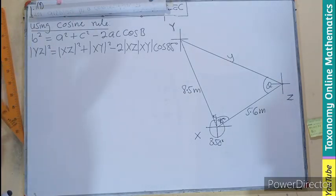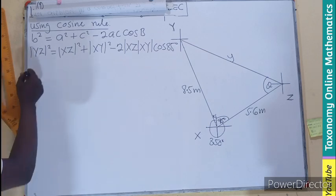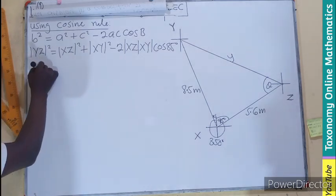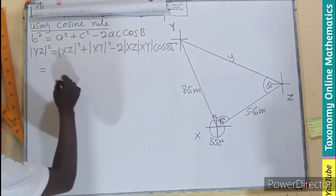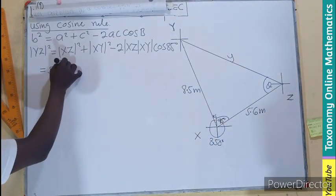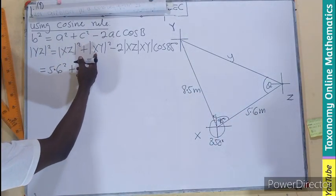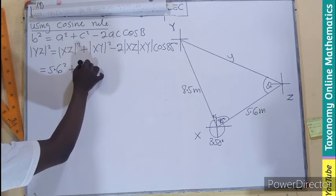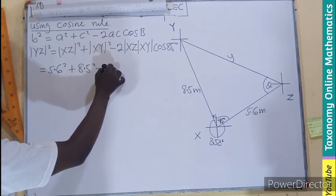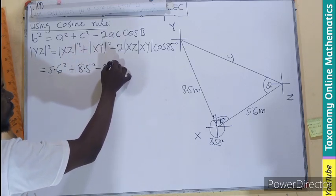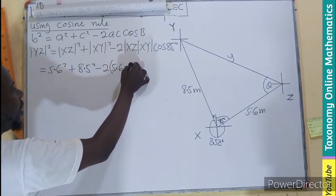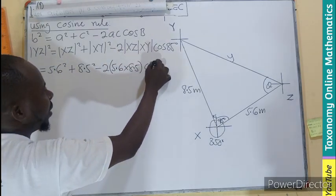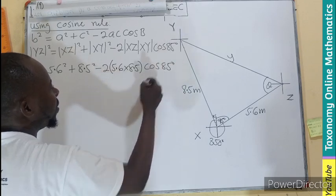Let's do substitution of the values we have there. Since this is unknown, let's keep maintaining this. Then the XZ will be 5.6 squared. This is going to be 8.5 squared minus 2 times 5.6, multiplying 8.5, then the cosine of 85 degrees.